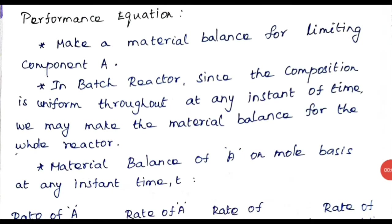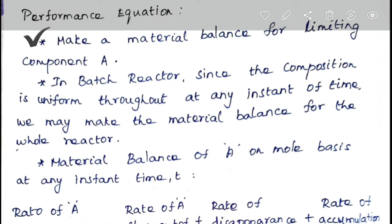We are going to develop the performance equation for a single fluid reacting in an ideal batch reactor. We call these single-fluid reactions homogeneous reactions — reactions that occur in a single phase. For this, we make a material balance for the limiting component A, which is the component that determines the rate of the reaction.